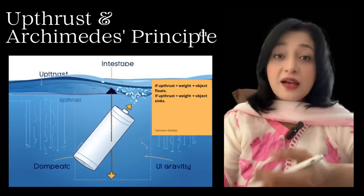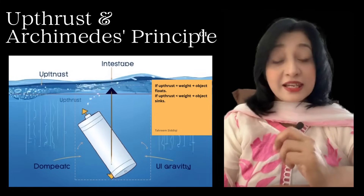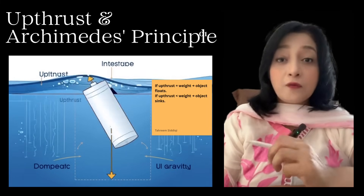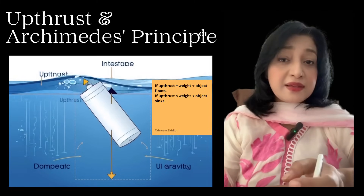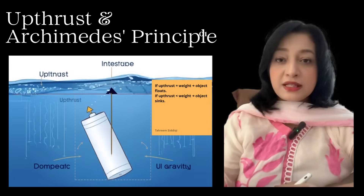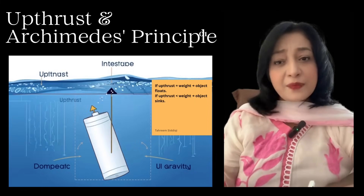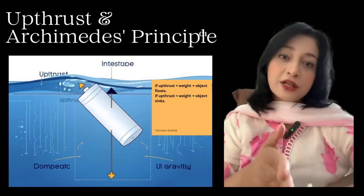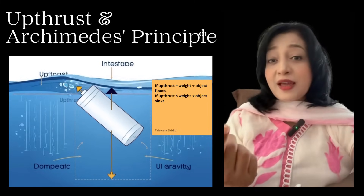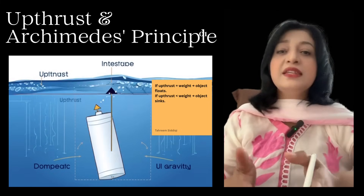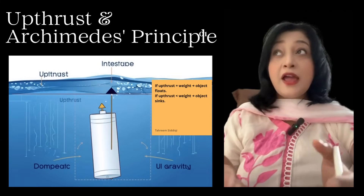Now, upthrust or buoyant force: when an object is partially or fully immersed in a fluid, it experiences an upward force called upthrust or buoyant force. Archimedes' principle states that the upthrust on an object immersed in a fluid equals the weight of the fluid displaced. If upthrust equals the weight, the object floats; if upthrust is less than weight, the object sinks. Ships float because their shape makes their average density less than water, even though they are made of heavy steel.